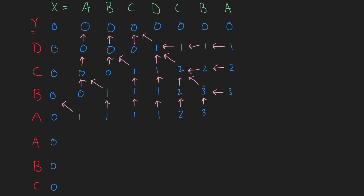A and B — not the same — so we take three, the larger of the two. A and A are the same, so we add one to the diagonal, giving us four, and point up there. Now we have another A row, and since nothing has changed it will be exactly the same as the row above. A and A match so we take it from the diagonal — one. A and B are not the same so we take the top one. A and C aren't the same so we take the top one. A and D aren't the same — same deal, take the top one.